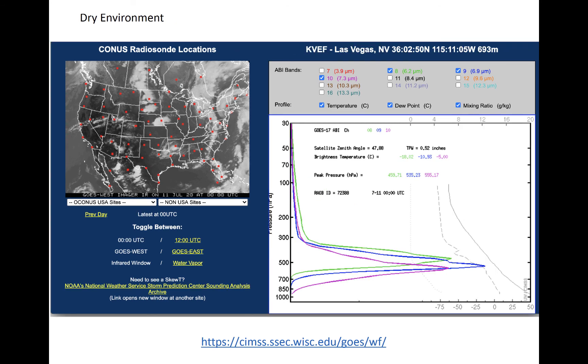This figure shows the weighting function at Las Vegas, Nevada at the same time. Las Vegas is in a desert, and this sounding was taken in July, so the total precipitable water was a fairly dry 13 millimeters. When compared to the weighting functions in the moist Alabama environment, these three weighting functions, still representing bands 8 through 10, are much closer together. They all have peaks between about 450 and 550 millibars.